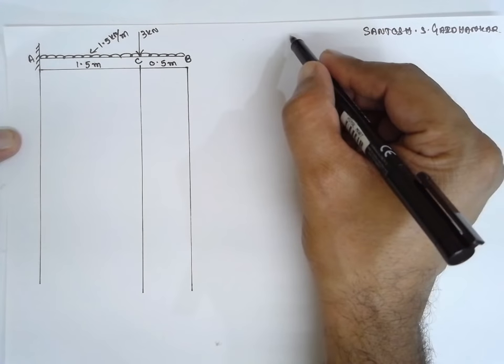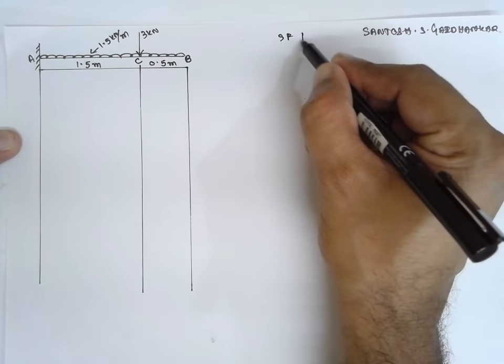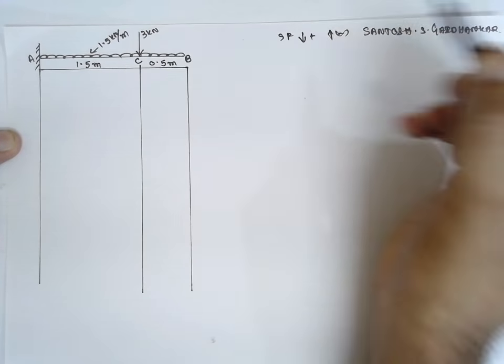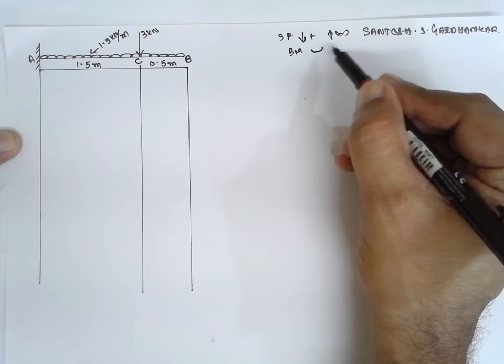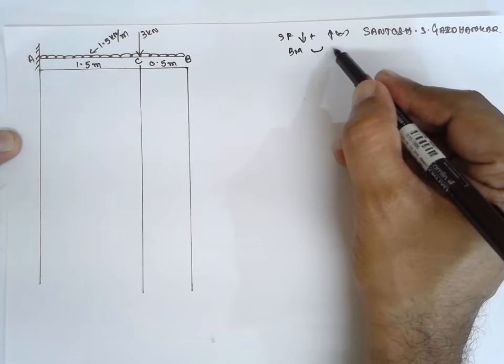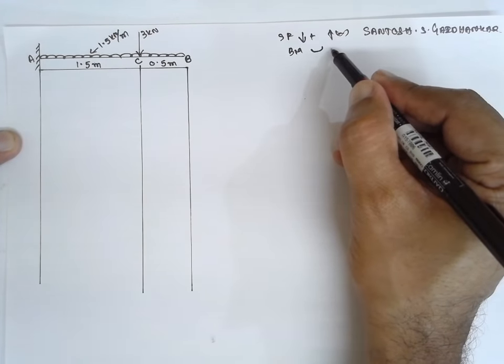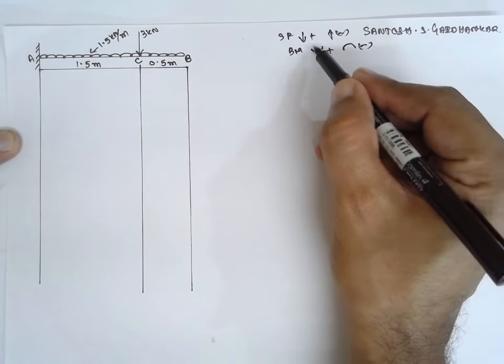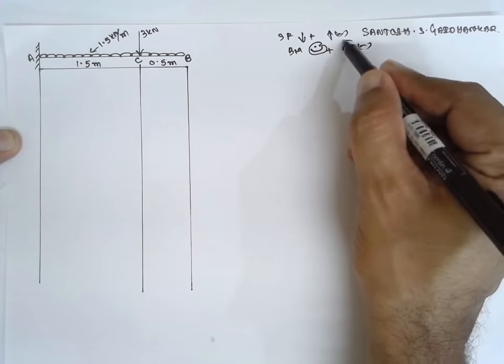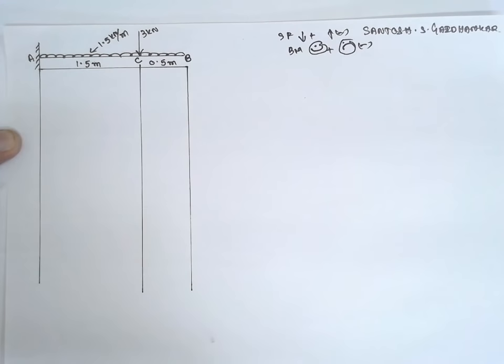Now for shear force I am considering downward as positive and upward as negative. For bending, sagging as positive and hogging as negative. That means smiling face is positive, sad face I am considering as negative here.